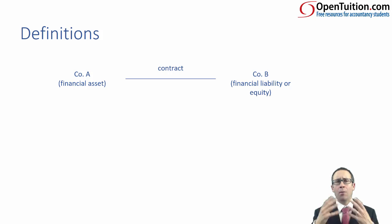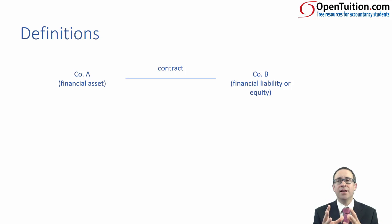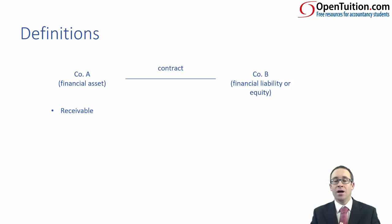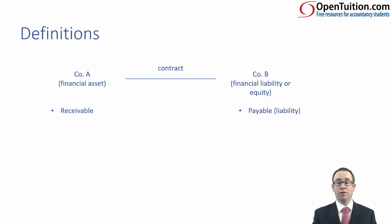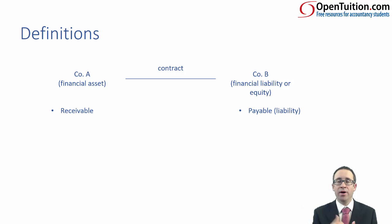People tend to panic, maybe rightly given the complexity of the standard, but some simple day-to-day transactions give rise to financial assets and liabilities. If company A makes a credit sale to company B, company A has a receivable — a contractual right to receive cash — which meets the definition of a financial asset. Company B has a payable, which is a financial liability because there is a contractual obligation to pay cash. So a simple everyday credit sale and credit purchase give rise to a financial instrument. Receivables and payables are therefore governed by the standards covering financial instruments.